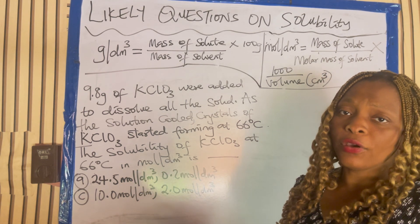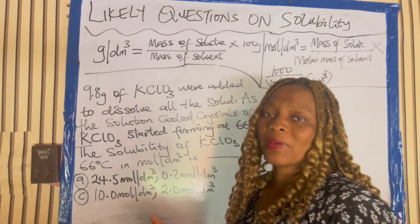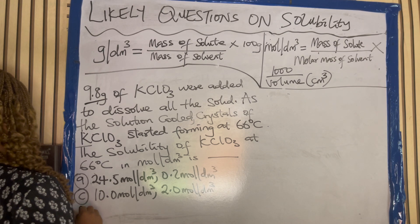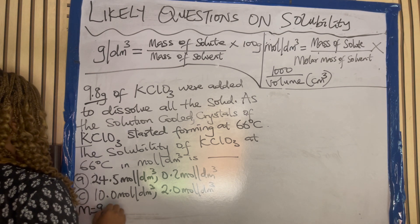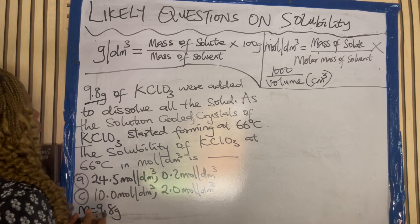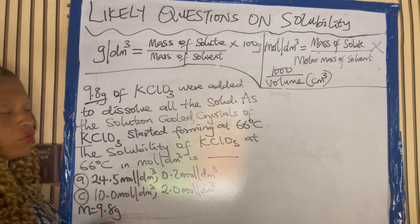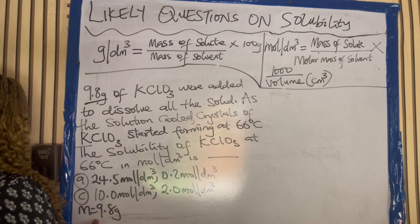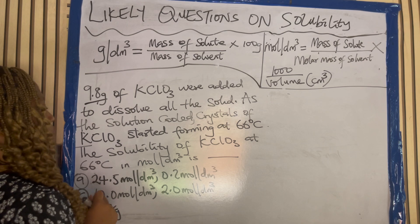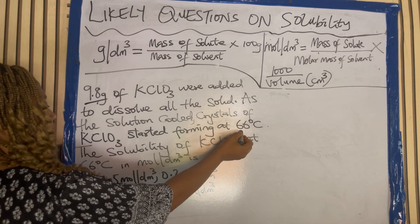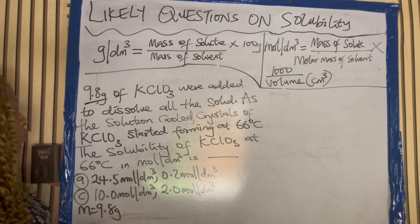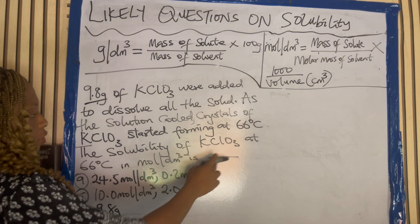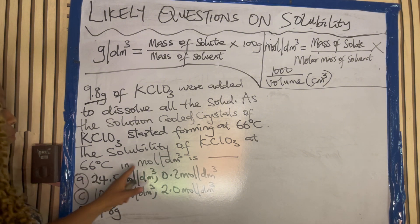The first thing you are going to do is write out the parameters given to you. This is mass of the solute — we have written that down. The temperature is at 66 degrees Celsius. And we have to calculate the solubility of potassium chlorate in mole per dm cube.